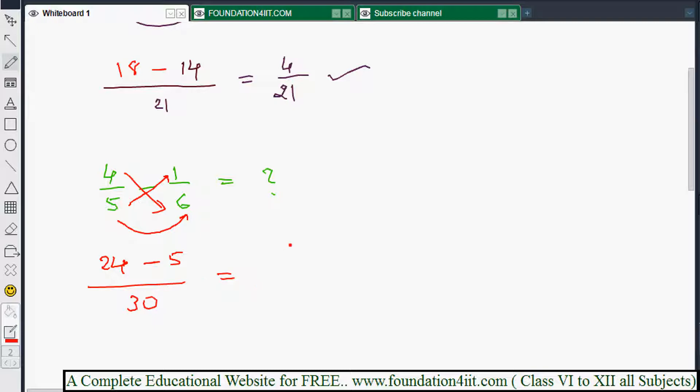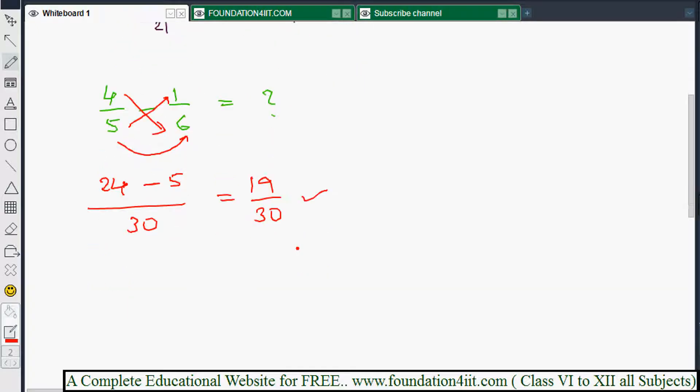You can write the direct answer: 24 minus 5 is 19/30. There is no common factor, so we can write it as this.